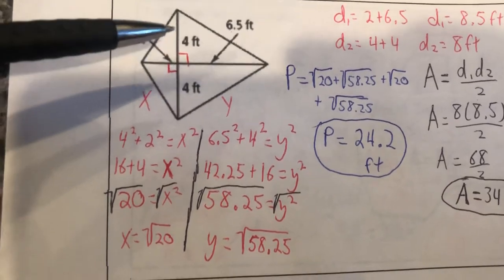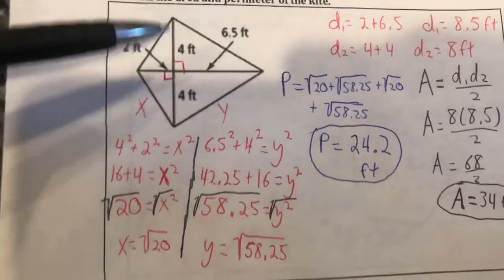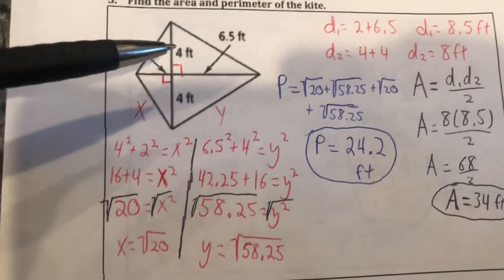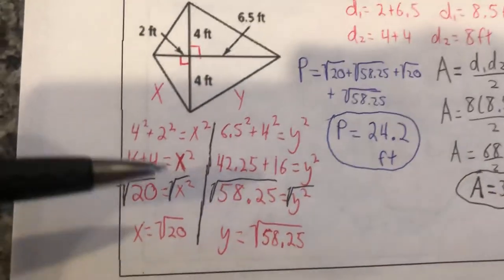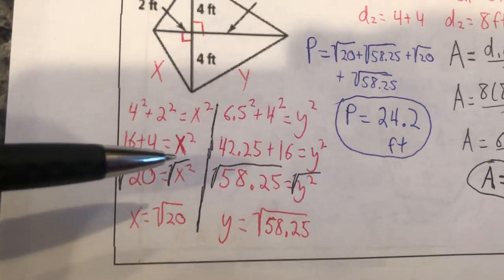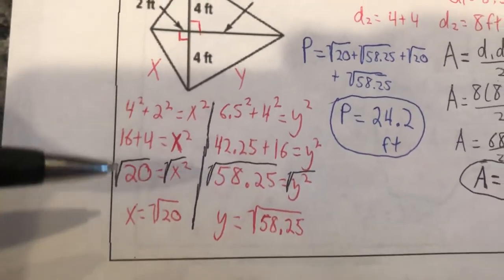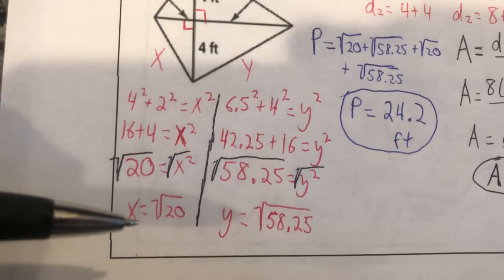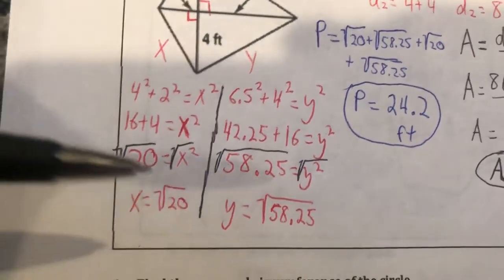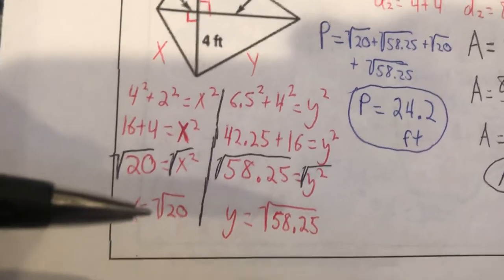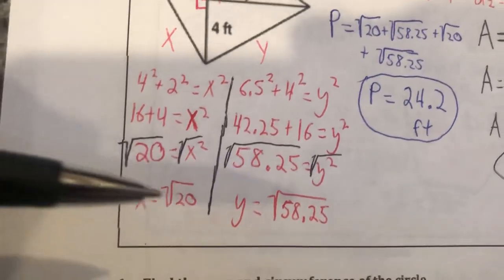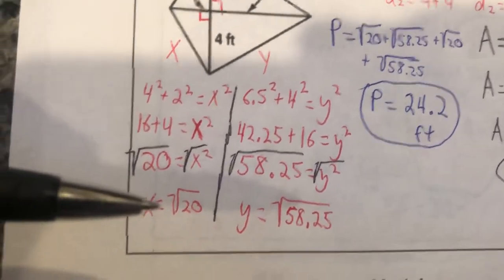So the triangles on the left here, let's say we're doing the top left triangle. We have 4 squared plus 2 squared equals x squared. We got 16 plus 4 equals x squared, 20 equals x squared. Take the square root of both sides and x is going to be the square root of 20. Now again I could reduce that to the decimal, but I'm going to keep it as root 20 so that I don't have to round until the very end of the problem.